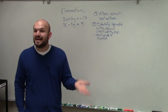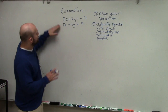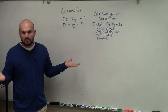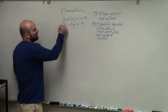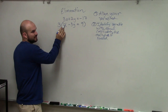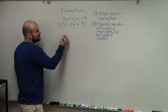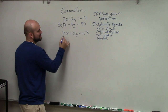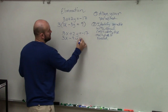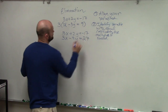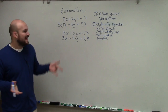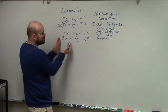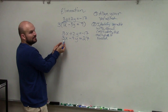Basically, what I'm going to do is multiply one or both of the equations by a number so that the coefficients become equal. Is there a number I can multiply by one of the equations to give me equal coefficients? What would happen if I multiplied the bottom equation by 3? It would become 3x. So I'm going to rewrite the top equation and multiply the bottom equation by 3, giving me 3x minus 9y equals 27. By applying the distributive property, I now have two equations with the same coefficients.